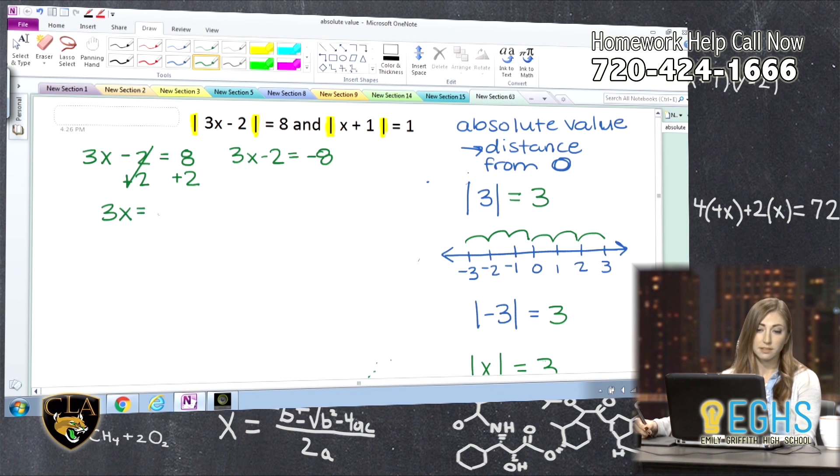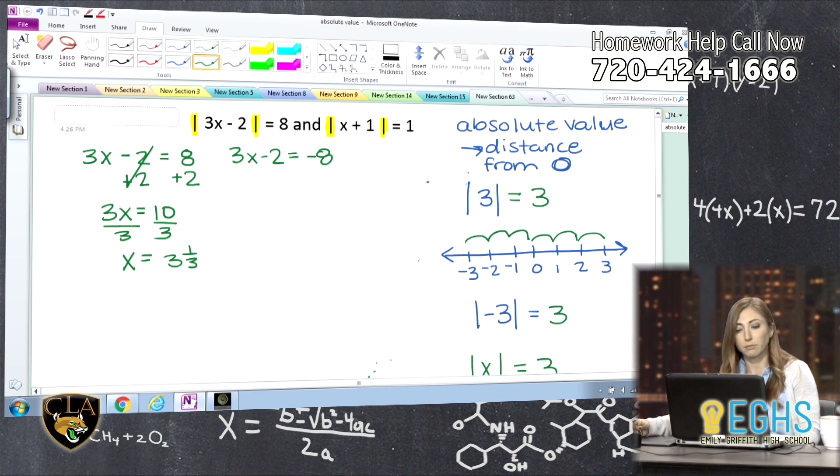So then I get 3x is equal to ten, and then dividing by three, I get x is equal to three and one third, you could say three point three. And then over here I'm going to solve this one, so adding two, same steps to solve, which is kind of nice. We end up getting 3x is equal to negative six, and then divide both sides by three, and I get x is equal to negative two.